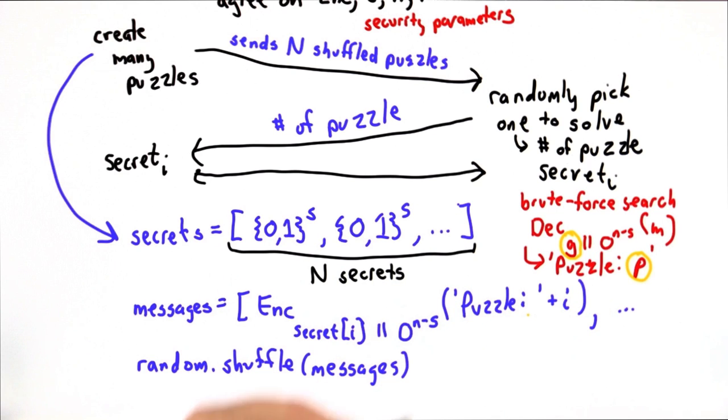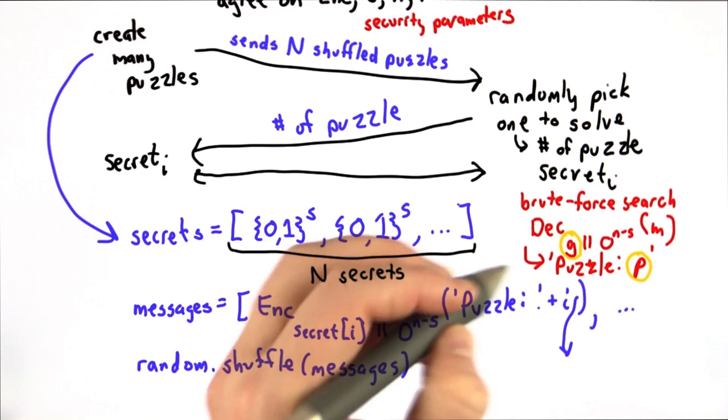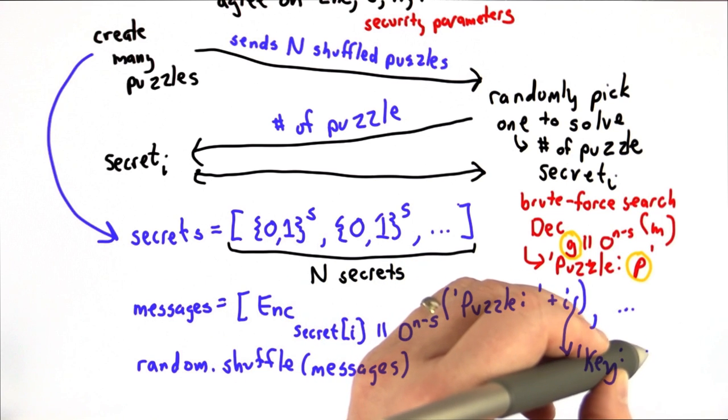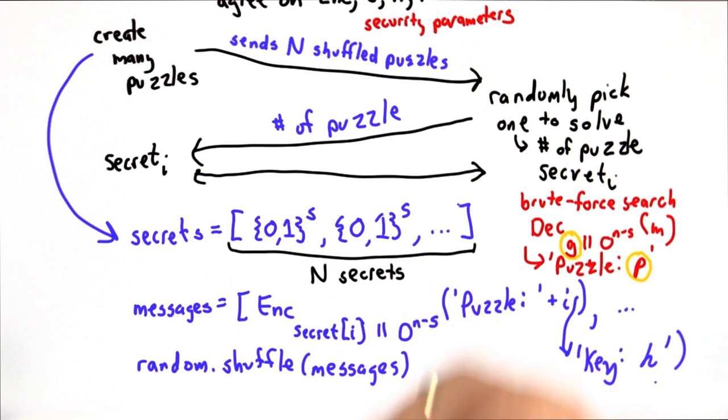If we wanted a larger key, which we probably do, what we should include in the puzzle, instead of just the i, we should include a key, and this means the key can be of any length. This would be some new random key associated with that puzzle.